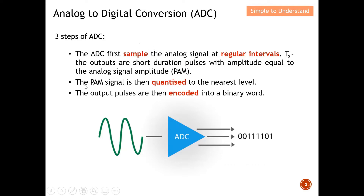The second step is quantization. The PAM signal is quantized to the nearest level — meaning it moves to the nearest level. For example, like choosing the nearest bus stop near my house. I will discuss quantization and encoding in more detail in the next few videos. For this video, I want to highlight the importance of sampling and the number of bits.